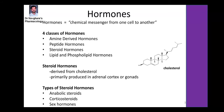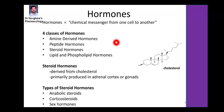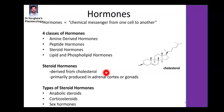Firstly, we have to know about what hormones are. Hormones are chemical messengers that transport messages from one cell to another cell. There are four types of hormones based upon chemical nature: amine derivatives, peptide hormones, steroidal hormones, and lipid and phospholipid hormones. Steroidal hormones are derived from cholesterol.